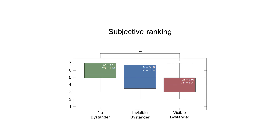Additionally, after completing the VR tasks, participants rated the question 'How well were you able to focus on the tasks?' using a Likert scale from 1 (not at all) to 7 (very well). Here the no-bystander condition again provided the best results, and the difference between the no-bystander and visible-bystander conditions was significant.